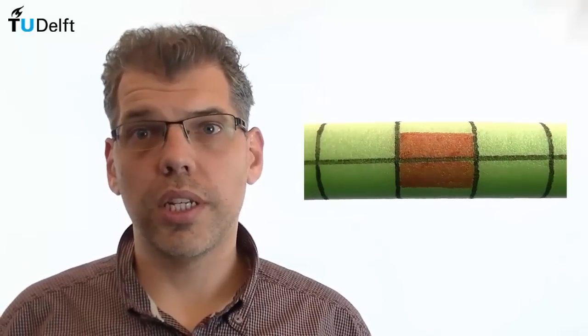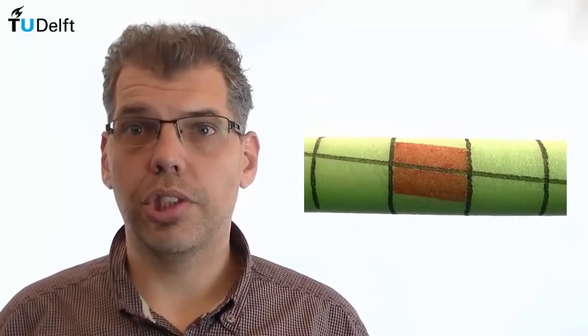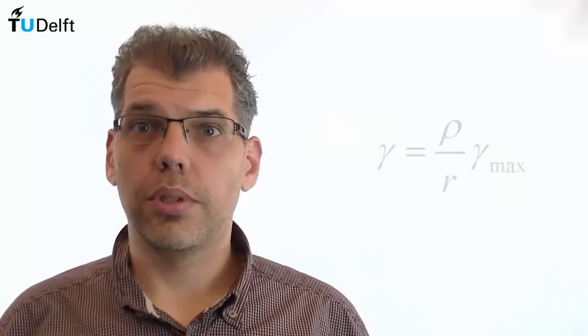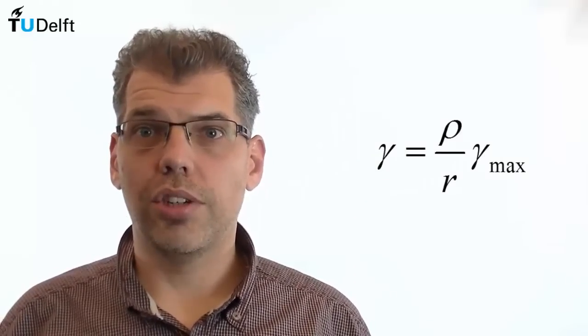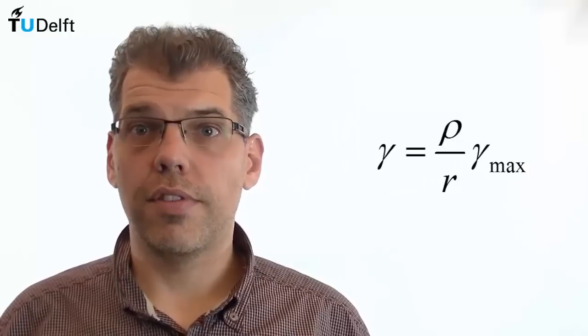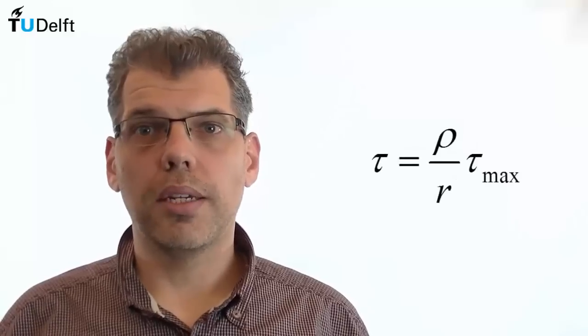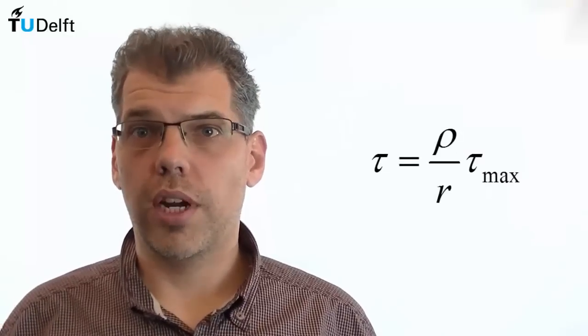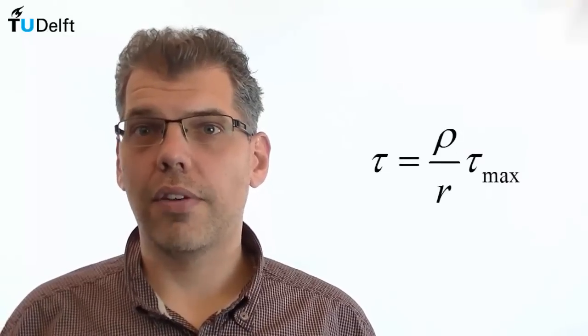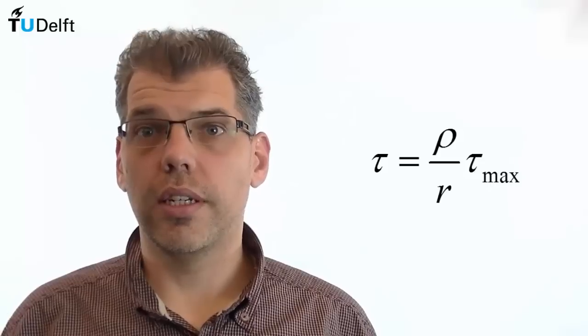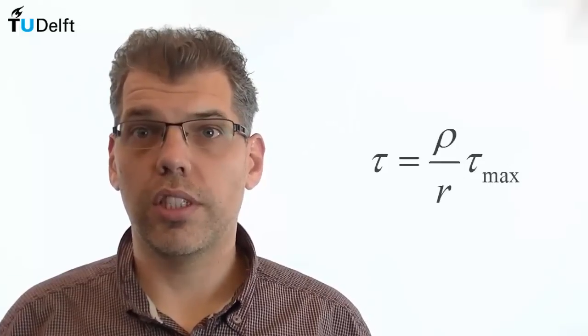we first set out to take a look at the deformation associated with torsion and found that torsion produces twist resulting from a state of pure shear. Next, we took a look at the shear strain distribution compatible with this deformation and found that shear strain varies linearly with radial position within the cross-section of a shaft. Finally, we applied Hooke's law to convert the shear strain into a shear stress and found that shear stress also varies linearly with radial position within the cross-section.